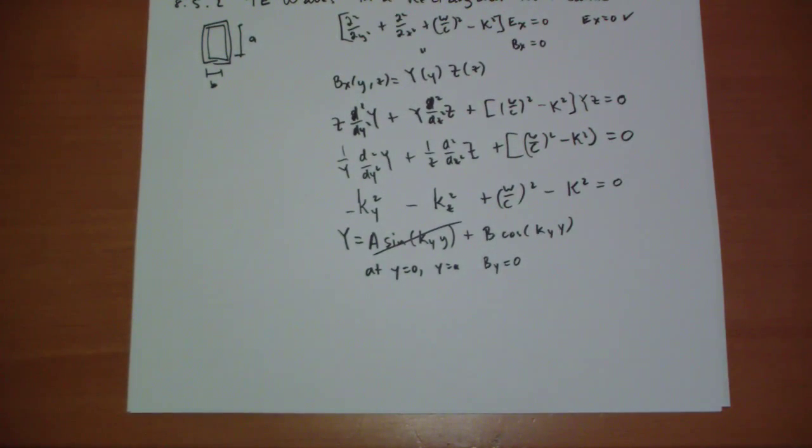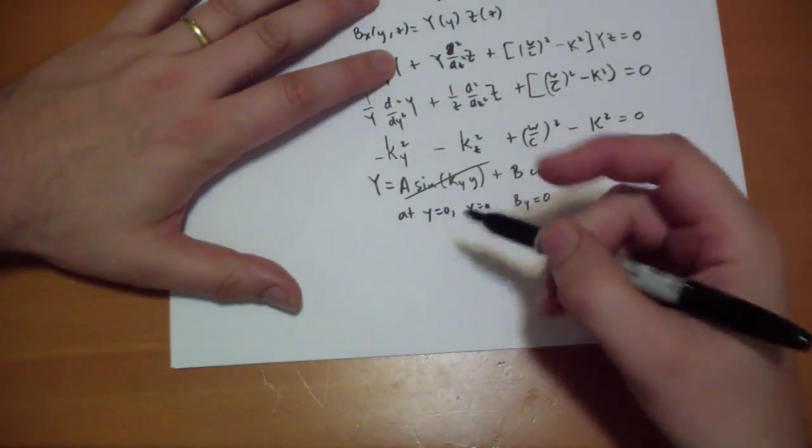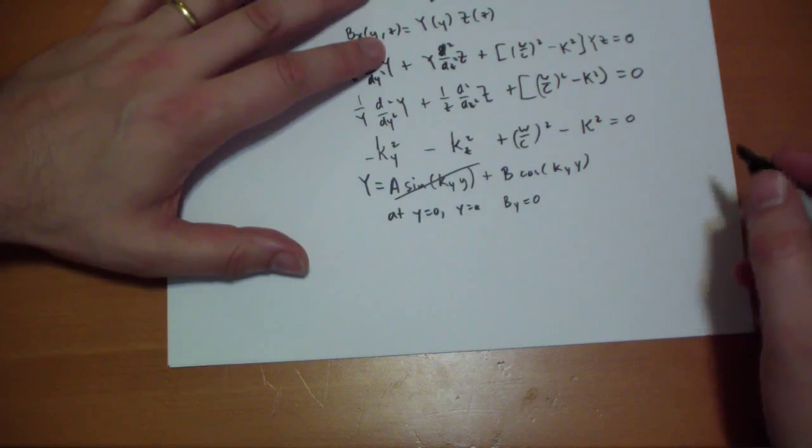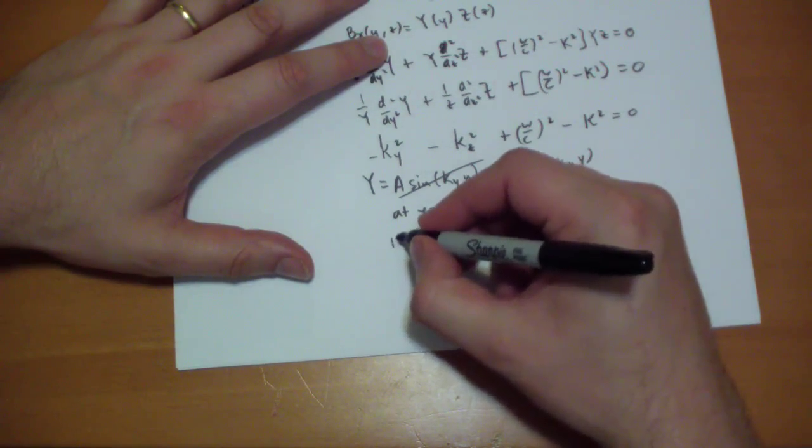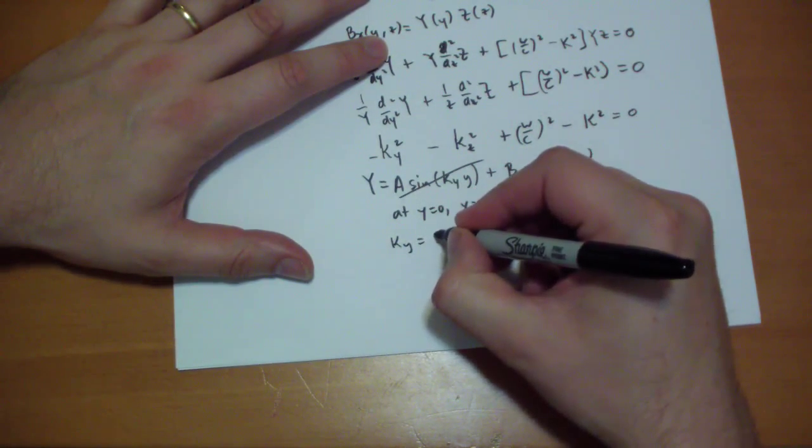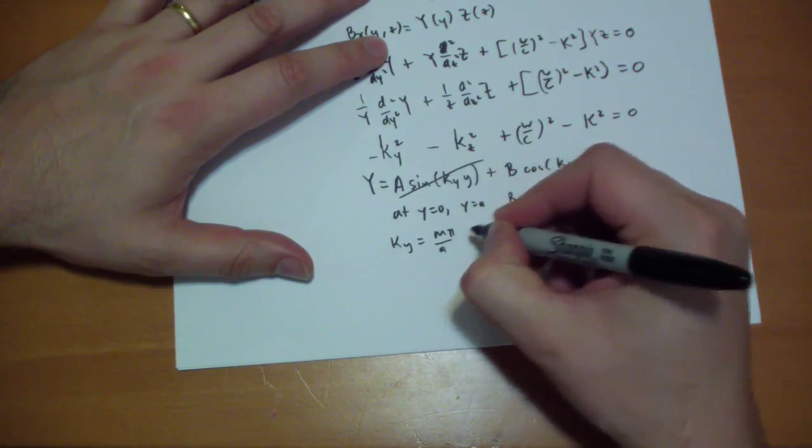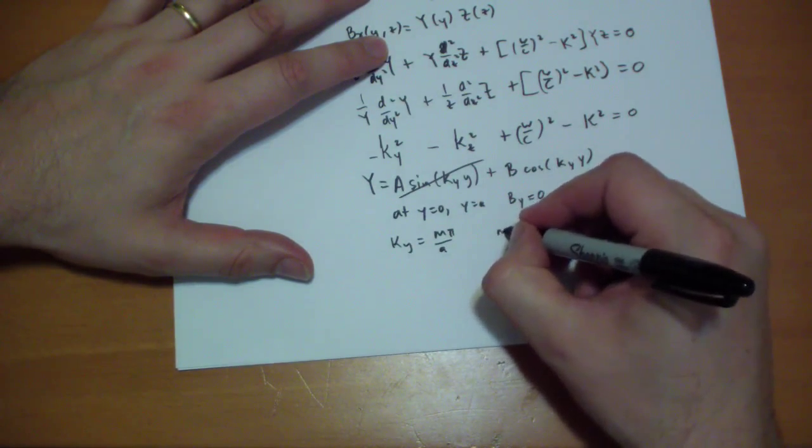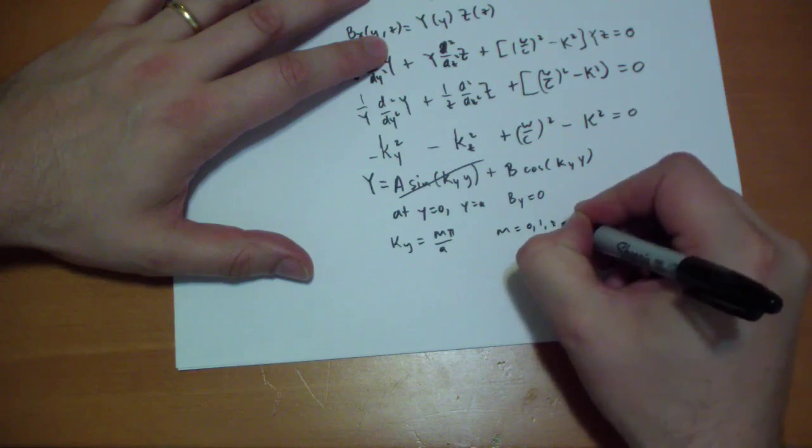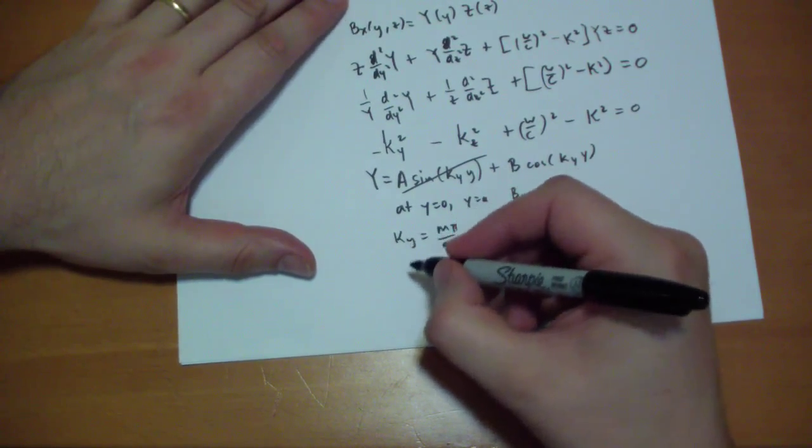No? Is that right? Or do we keep that term? Regardless, that term drops. Anyway, KY must be something like M pi over A, where M is some integer.